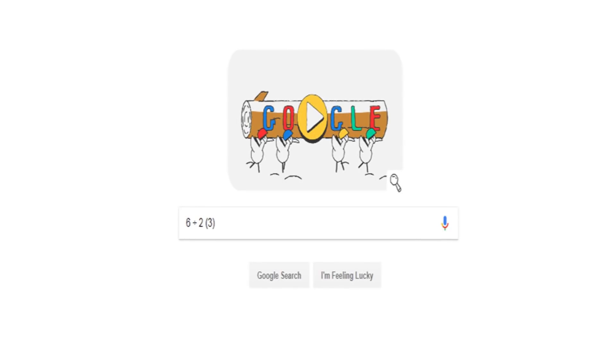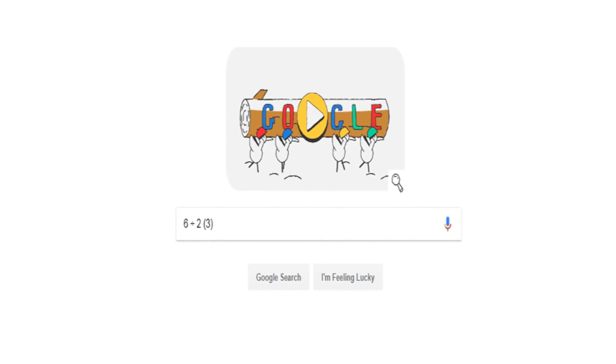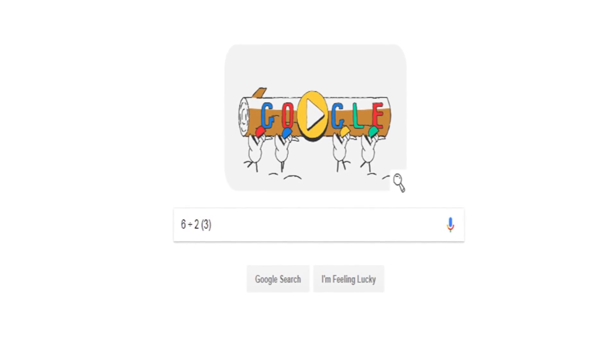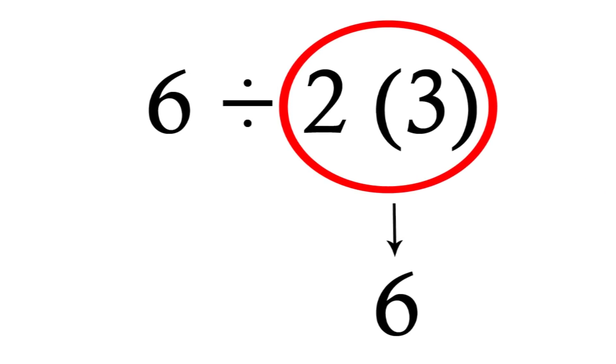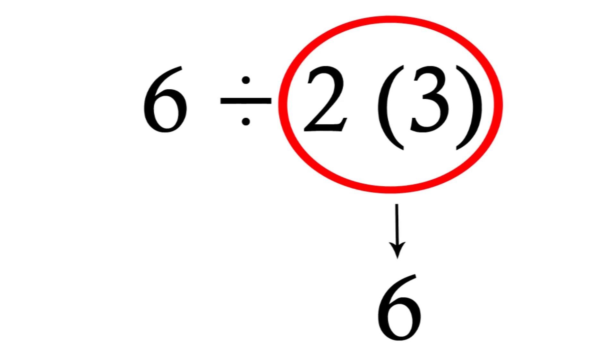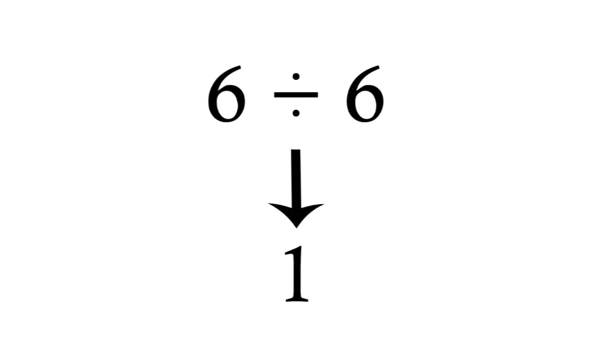The real answer is what you should do next. If you input this equation in Google or any other search engine or scientific calculator, each of these would suggest that you would multiply the 2 from the remaining problem with the 3 that you got for the answer, which would give you 6. Next, you would take the remaining 6 and divide it by 6 to get an answer of 1.